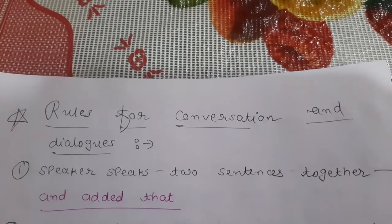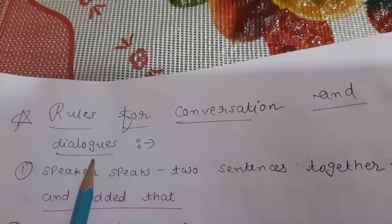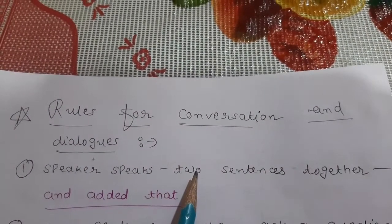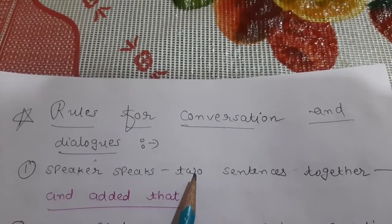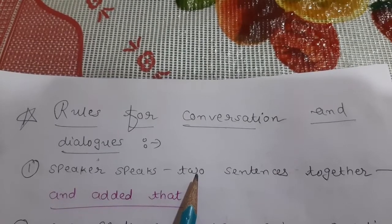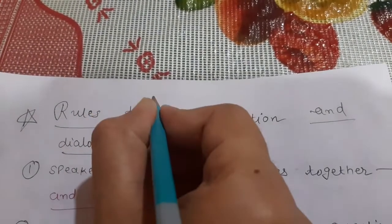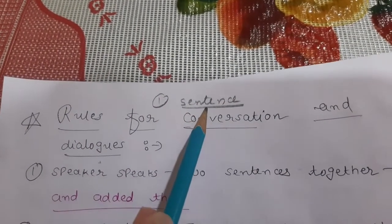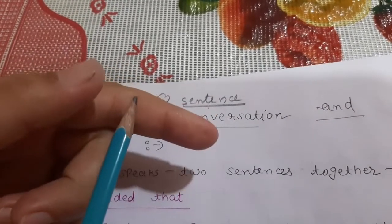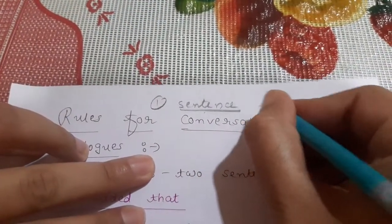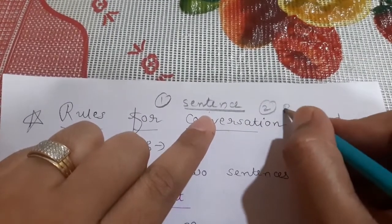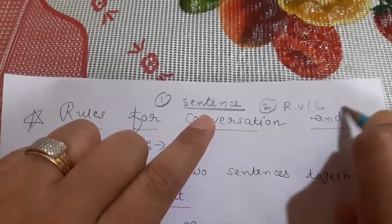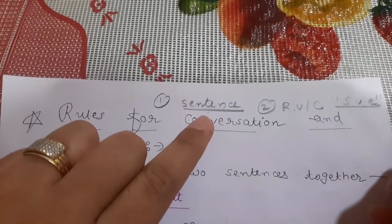Now I am going to talk about rules for conversation and dialogues. In the exam, a paragraph will be given, not single sentences. A whole paragraph may have one simple and one interrogative sentence, or two simple, two interrogative, or all four in one. The first rule: check which kind of sentence it is — simple, interrogative, or any of the five types.